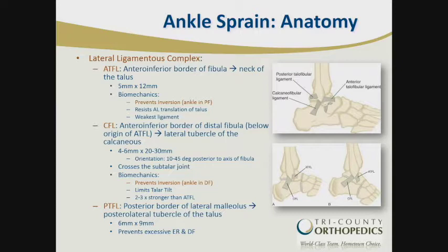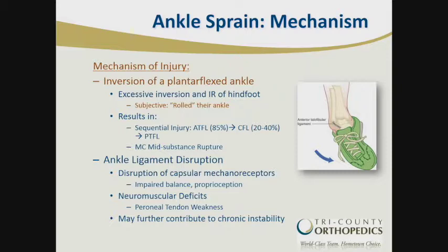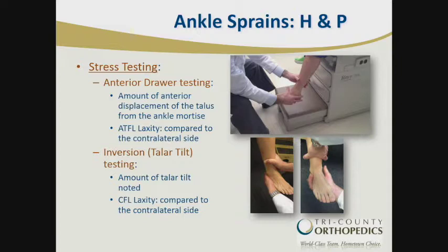There are three major lateral ankle ligaments: the ATFL, or anterior talofibular ligament; the CFL, or calcaneofibular ligament; and the posterior talofibular ligament. The mechanism of injury is more of an inversion mechanism of a plantar flexed or dorsiflexed ankle, resulting in sequential injury to the ATFL, followed by the CFL, followed by the PTFL. This can also disrupt the capsule mechanical receptors, leading to impaired balance and proprioception after the injury. It can also cause a stretch injury to the peroneal tendons, leading to residual weakness — all of which may contribute to chronic instability if not identified and treated.